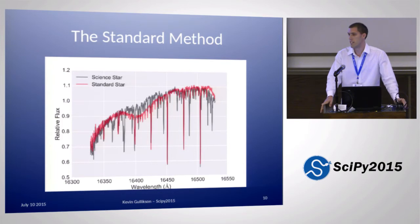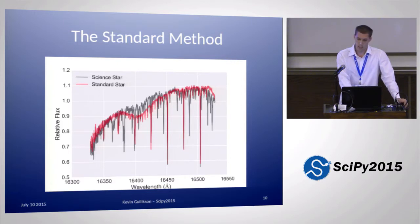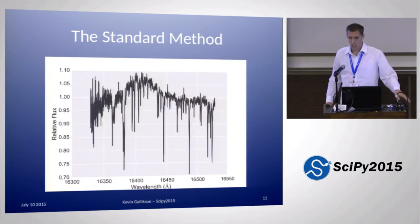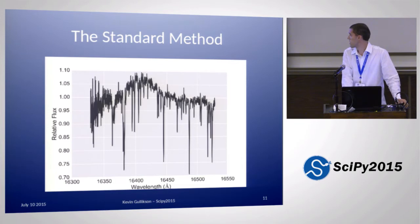The point of the hot rapid rotator is that it's relatively featureless and all of the sharp features there are actually coming from the Earth's atmosphere. You can just divide it out and you remove the telluric absorption. You get something like this where the telluric lines have been removed and you're left with only sharp features that are actual astrophysical absorption lines from the star.